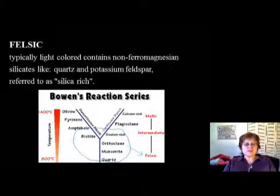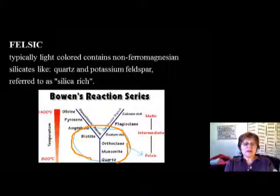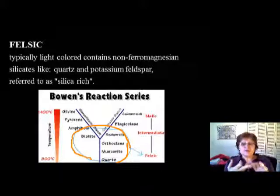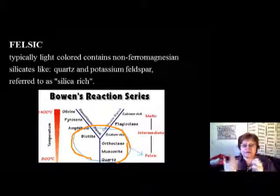Remember, if you look at the Bowen's reaction series, we are in the lower part of it. I told you that the Bible of the igneous rock is the Bowen's reaction series. The felsic igneous rocks will have amphibole, biotite, sodium plagioclase, orthoclase or K-feldspar, possibly muscovite, and quartz. Quartz is whitish-grayish, muscovite is almost white, orthoclase K-feldspar is sometimes pink, biotite is black, amphibole is black, and sodium plagioclase is white. These rocks are usually very light with relatively low density.